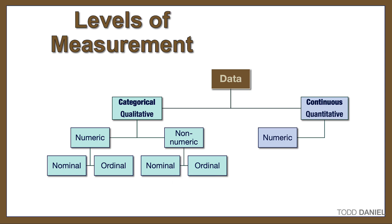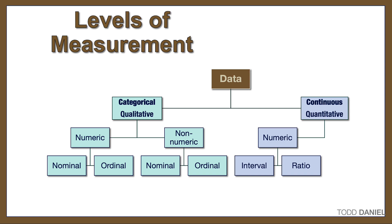The two types of continuous data, interval and ratio, are very similar to each other, and in fact they do the same job. Interval level data are built on a scale with equal intervals. Ratio level data are also built on a scale with equal intervals, except unlike interval, ratio data have an absolute zero as a starting point. Both interval and ratio level data are what we call scale level data, and we will use both of them in the same way in our analyses.